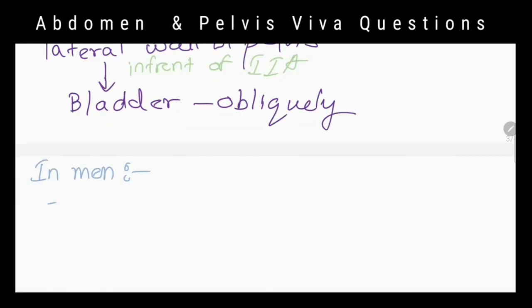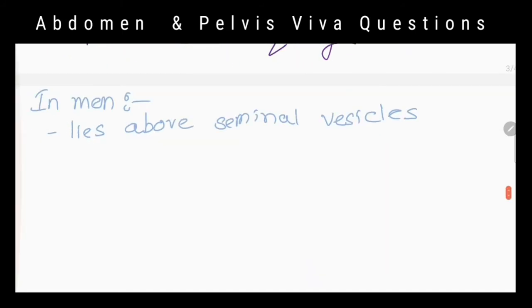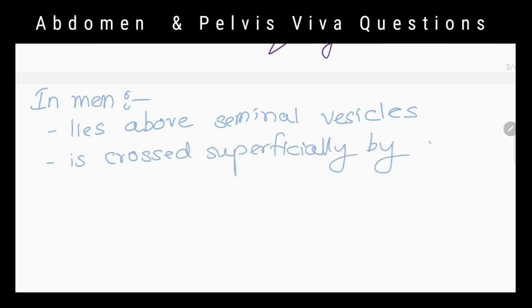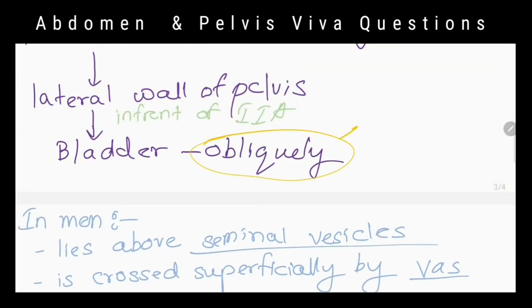What are the important relations near the termination of the ureter in a male? It lies above the seminal vesicles and is crossed superficially by the vas deferens. What is the importance of that obliquity? It prevents urinary reflux from the bladder.